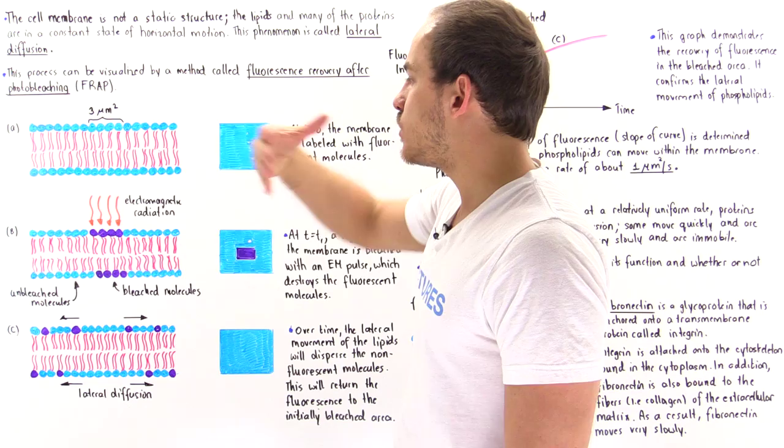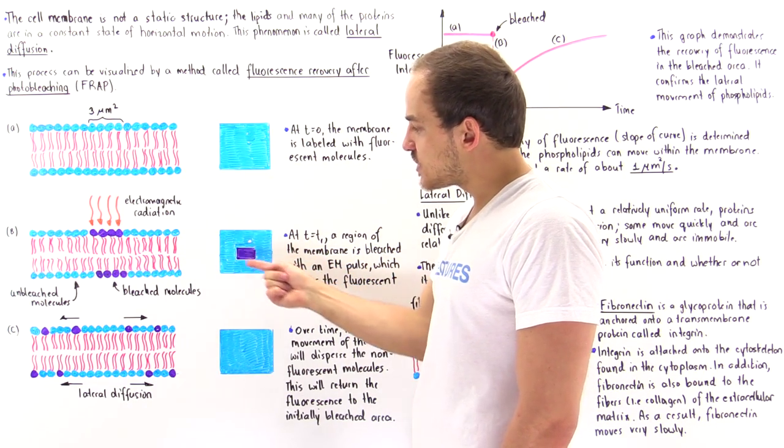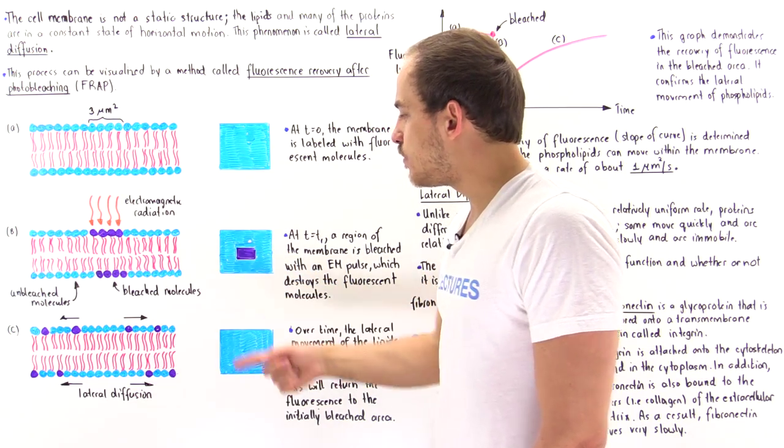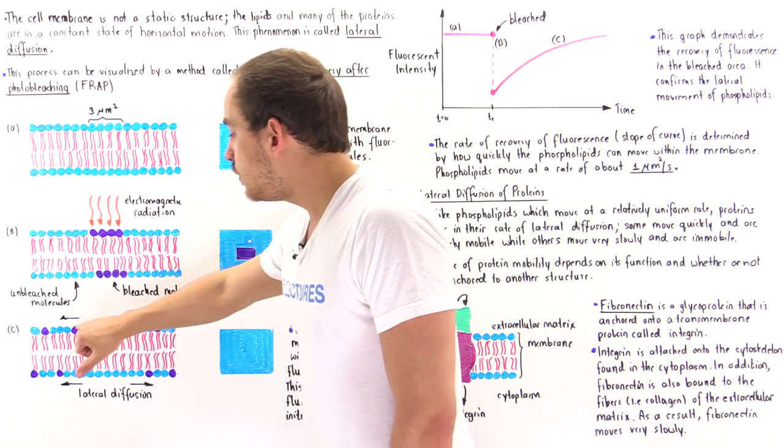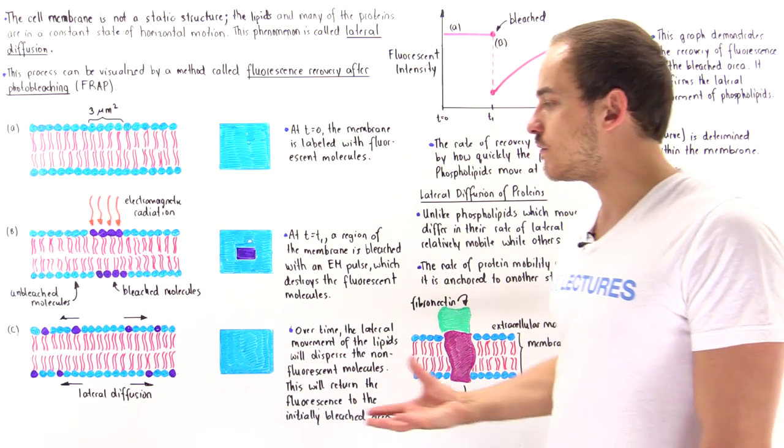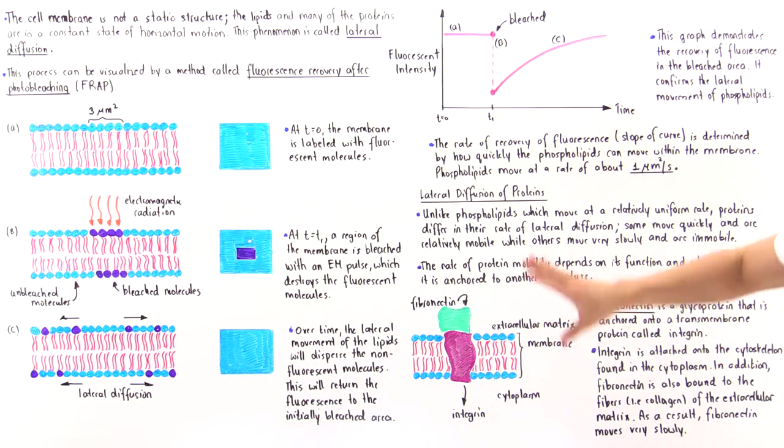So initially, this is what we see. Once we bleach it, we see this purple spot. So let's say it's purple, and then over time, this purple spot disappears because these bleached purple molecules essentially move away. And so the fluorescence actually is recovered.